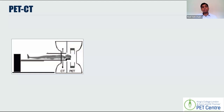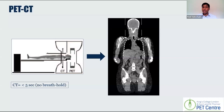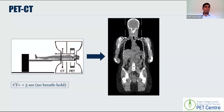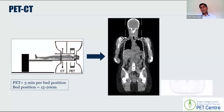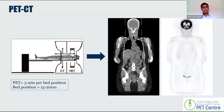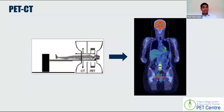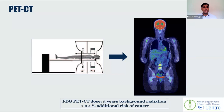You will then hop onto the couch and we will firstly do the CT scan, which takes less than five seconds and does not require breath-holding. We will then slowly acquire the PET scan in about 15 to 20 bed positions, spending about three minutes over each position. Depending on how tall you are and how much we're covering, the scan will take about 20 minutes or so. We will then fuse those images to interpret the scan and give you the answers you need.